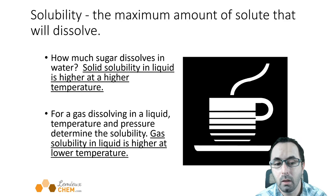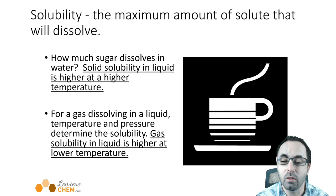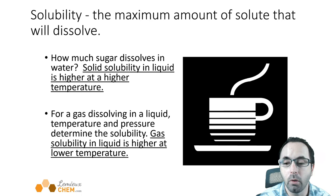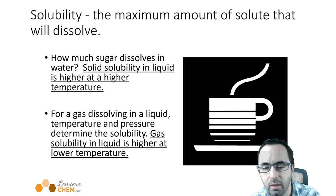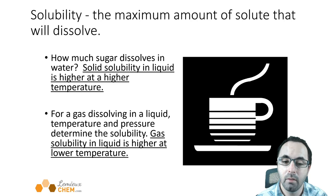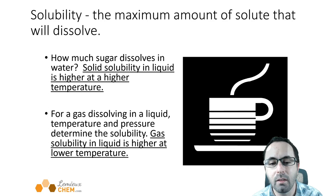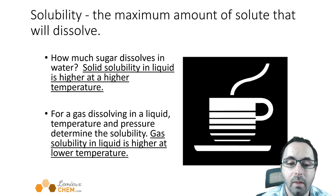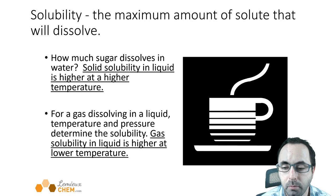If we want to talk about how soluble something is, an important factor is the current properties of the solution. For example, if you're trying to dissolve sugar in iced tea, you already know that you want to dissolve the sugar before you put the ice in. If you just try to dissolve it when it's cold, it takes longer and also less sugar would ultimately dissolve in the tea. That is because solubility in a liquid is greater at a higher temperature.